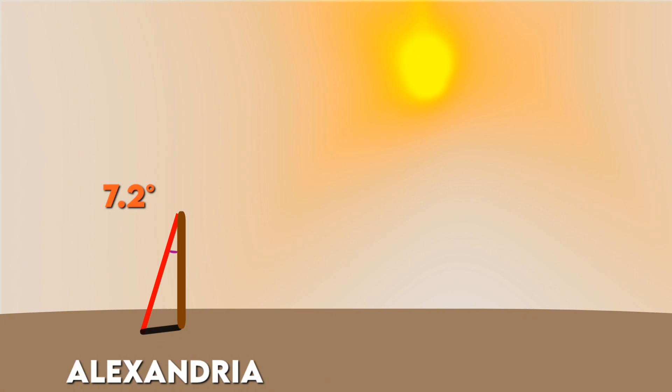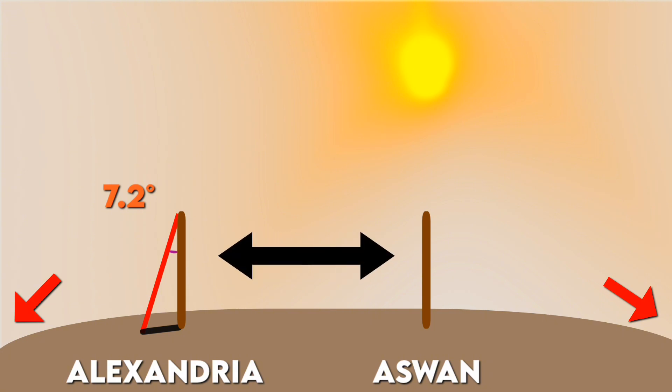However, since a shadow appeared in Alexandria while none appeared in Aswan, the Earth could not be flat, it had to be curved. The curvature of the Earth caused the shadow to form at different angles in different locations.